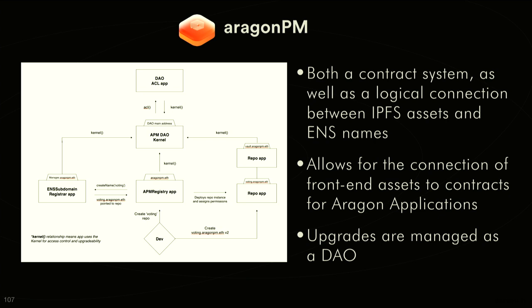Aragon PM is probably the part that the average developer building an Aragon application needs to understand the least — it's probably the part you'll have to touch the least. The main thing it does for you as a developer is give you a logical way to link your IPFS content to a human-readable name and contracts. The main thing to understand as a starting developer is that it lets you link contracts to decentralized assets that aren't on-chain.